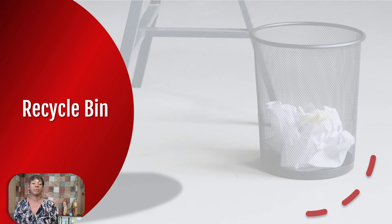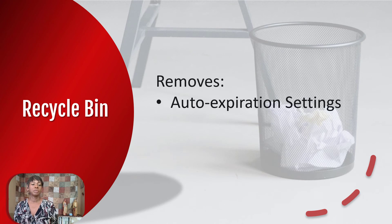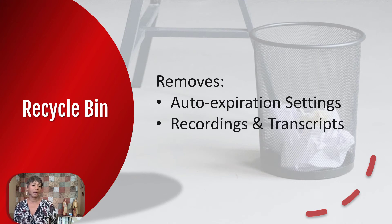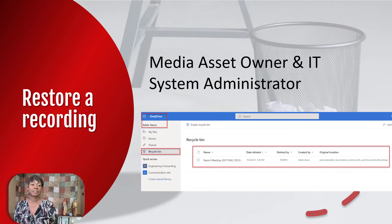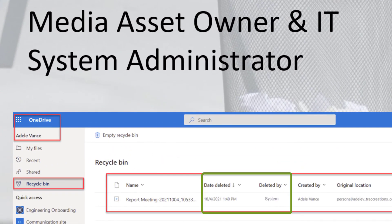When the recording moves to the Recycle Bin from the primary owner's OneDrive, the expiration date counter is cleared. In addition, the recording tabs and supporting transcripts are removed from the Microsoft calendar event, and the recordings are no longer searchable. The media owner and IT system administrator can restore a recording from the Recycle Bin. The Recycle Bin tells you when the files were deleted, by whom — in this case by the system — and provides the location of the file before deletion, which will be handy when restoring content to its original location.